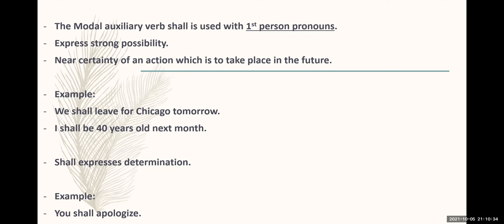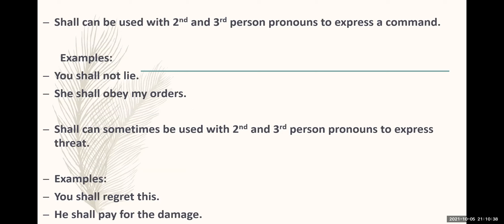With second person or third person, when shall is used, it becomes a command. You shall not lie. She shall obey my orders. If shall is used with second or third person sometimes, it's used for threat. You shall regret this. He shall pay for the damage. Threat situations - you can use it in different sentences.